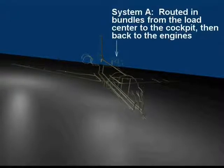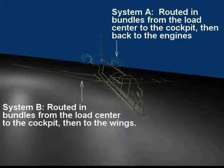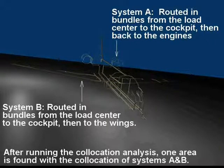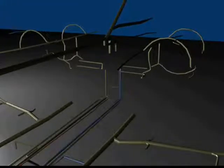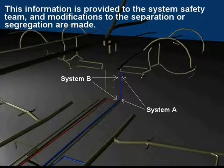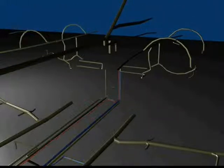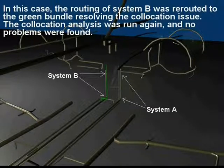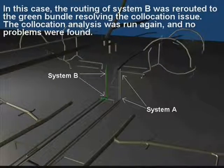The eWistrat has both the ability to automatically route the wires in the harnesses or allow for the importation of the information from the OEM's design. In this example, system A is routed from the load center to the cockpit and back to the engines, with system B being routed from the load center to the cockpit and then to the wings. Because the eWistrat integrates the eWist system routing and safety information, co-locations can be found in and around the wiring harnesses. In this case, the co-location analysis identified that systems A and B are routed immediately next to each other in the indicated bundles. This information is reported as part of the co-location analysis and would be provided to the system safety team, allowing for the wiring of these two systems to be segregated or separated. In this case, the routing of system B was rerouted to the green bundle seen here, resolving the co-location issue. The co-location analysis would then be run again and no problems would be detected.